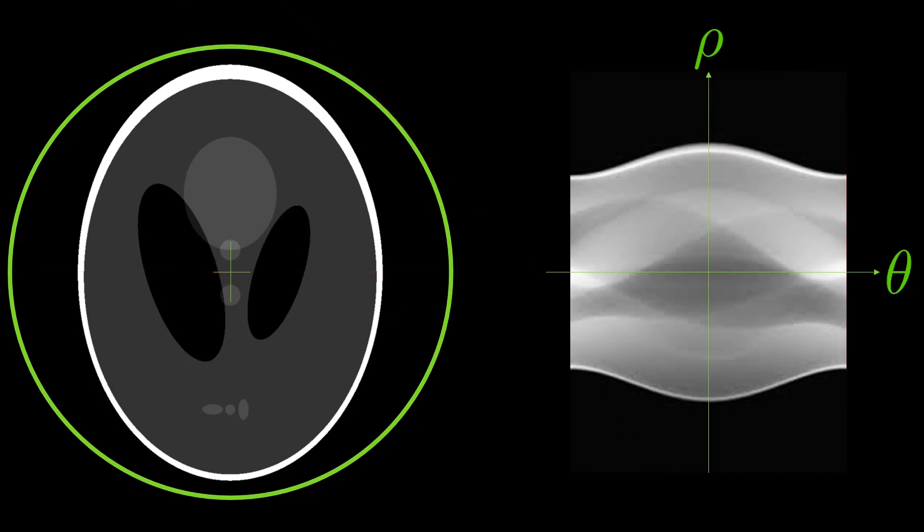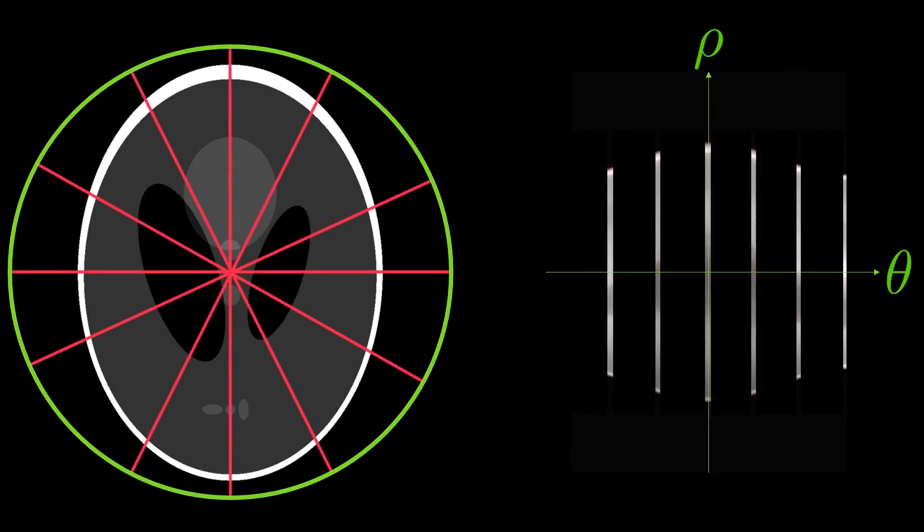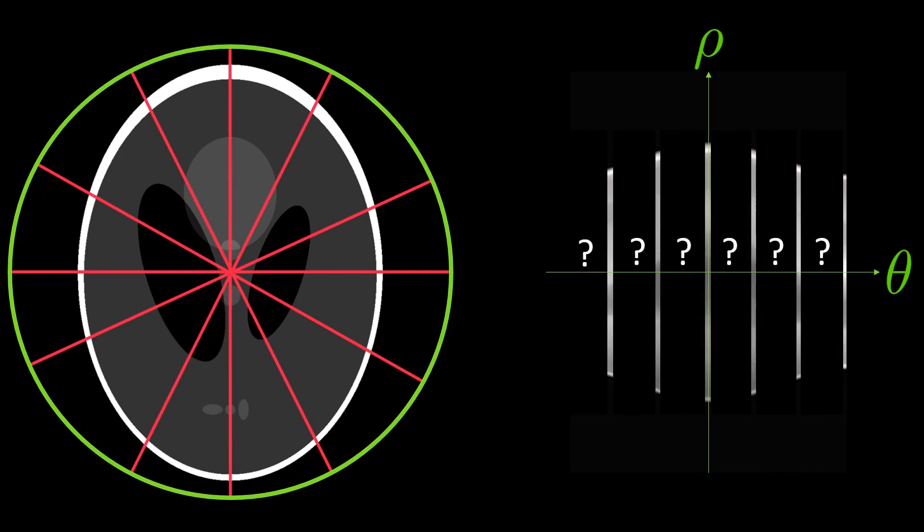For this example, suppose that we have, as measurements, a sparse collection of projections, and our goal is to estimate the projections at unobserved angles. We choose this problem setup because it is analogous to the novel view synthesis problem that we will show in three dimensions hereafter.